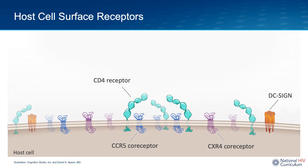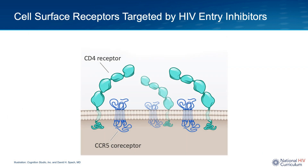Now let's look at the other target for HIV entry inhibitors: the host cell surface receptors. There are many human cell surface receptors that may be utilized by HIV to enter the cell, and normally these receptors function to play a key role in the host cellular immune responses. There are two host cell surface receptors targeted by the HIV entry inhibitors: the CD4 cell receptor and the CCR5 co-receptor.